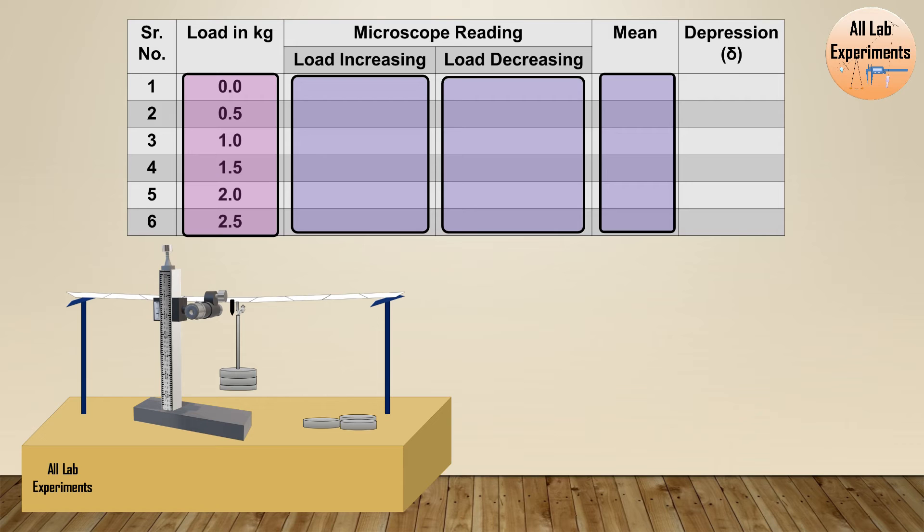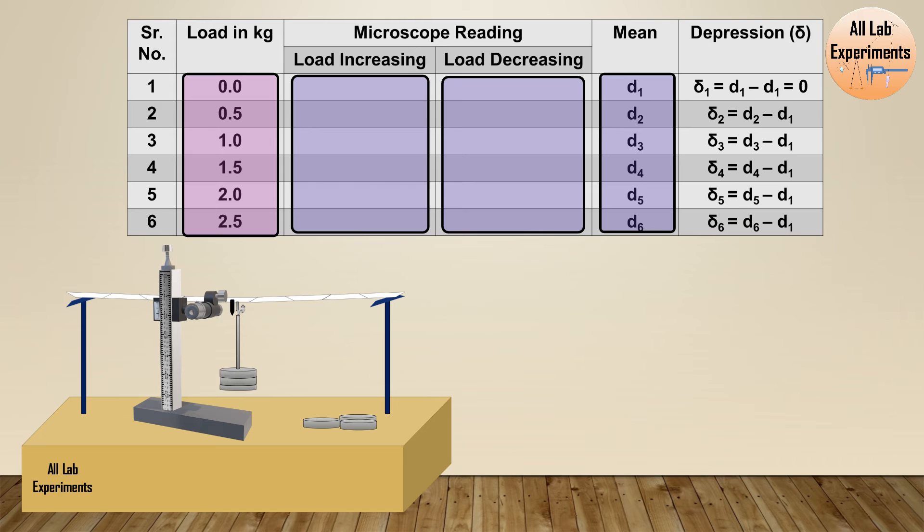Let's say these mean values are d1, d2, d3, d4, d5, and d6. But we need to calculate the depression to scale this measurement with respect to zero. We can perform our calculation like this: our depression is zero when there is no weight. Overall, we are deducting this value d1 from each of the value and getting the value of depression with weight.